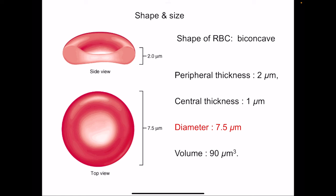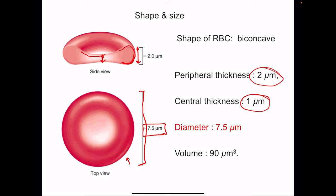Regarding the shape and size of RBCs, the diameter of an RBC is approximately 7.5 microns. The central thickness is 1 micron while the peripheral thickness is 2 microns — centrally the thickness is less at 1 micron while peripherally it is more at 2 microns. This is the biconcave shape of the RBCs.